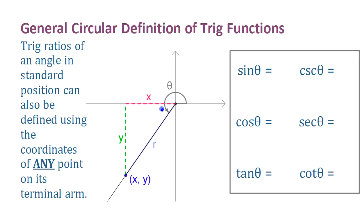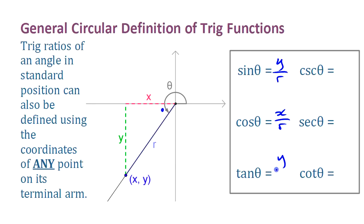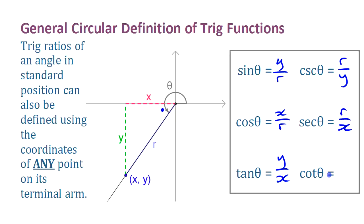The sine, if you're thinking of looking at the angle from this reference angle, is the opposite over the hypotenuse — in other words, y divided by the radius. Cosine is x over the radius, tangent is y over x. You can use your standard right-angle trigonometry as long as you're looking at this reference triangle. The cosecant is r over y, secant is r over x, and cotangent is x over y. Those are the general circular definitions of trig functions — you can use any point to write the trig ratios for that angle.